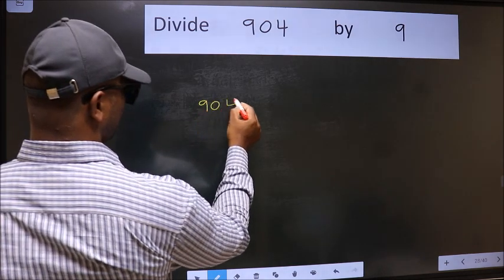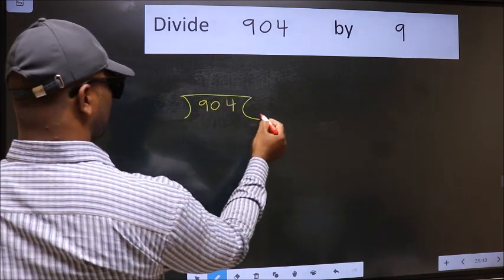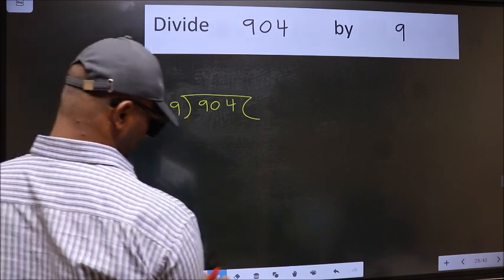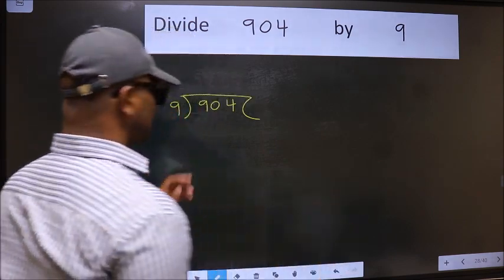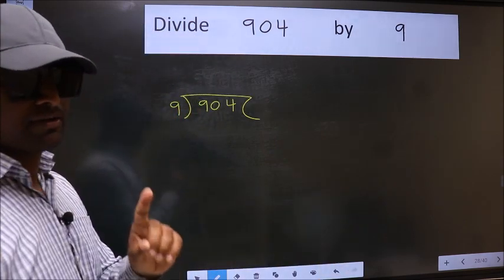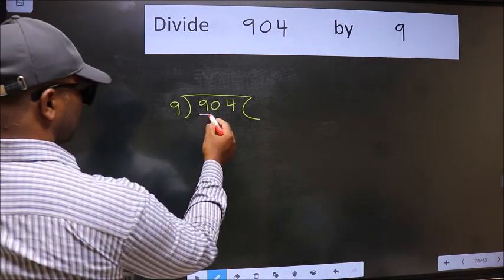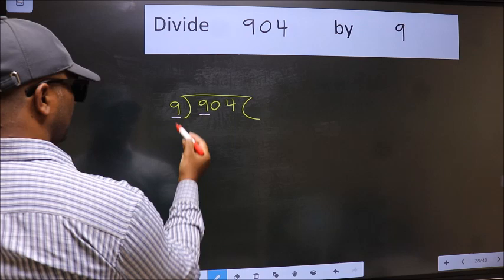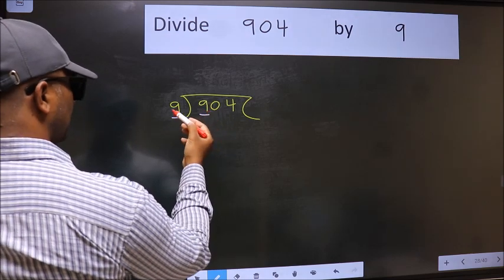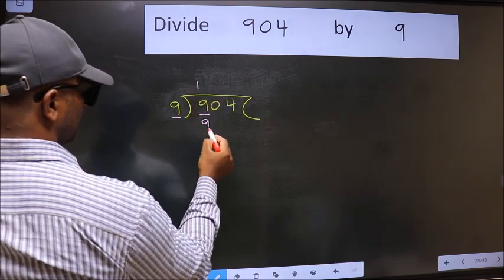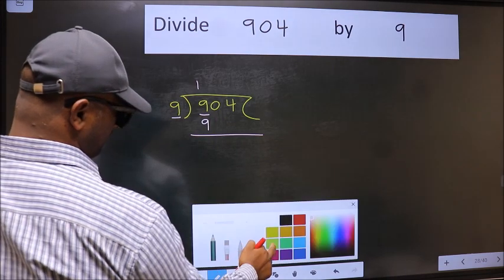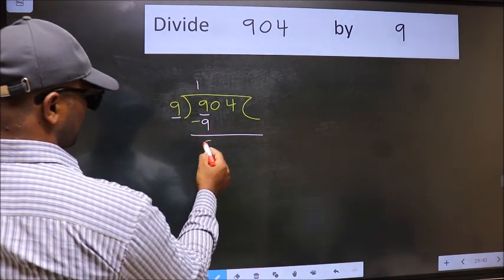904 and 9 here. This is your step 1. Next, here we have 9. Here also 9. When do we get 9 in the 9 table? 9 once is 9. Now we should subtract. We get 0.